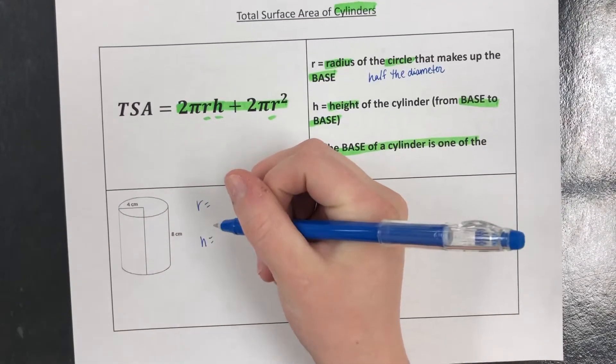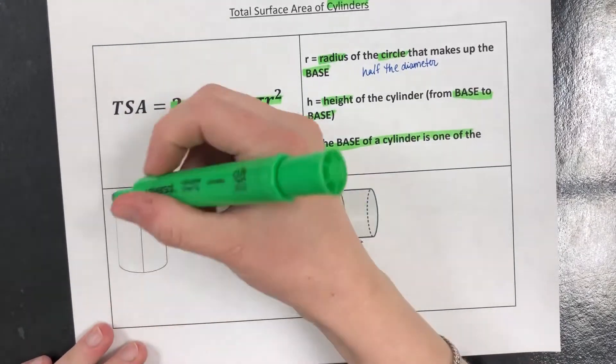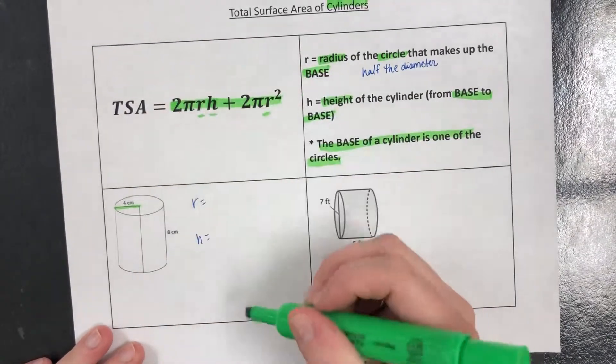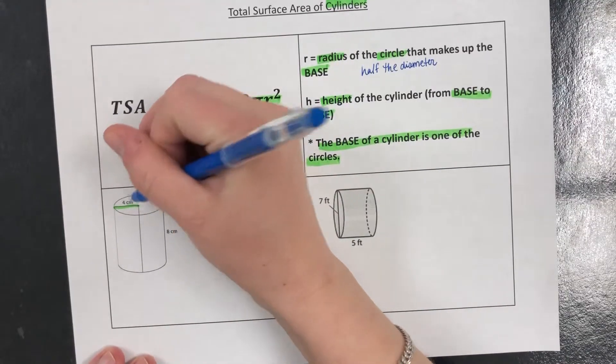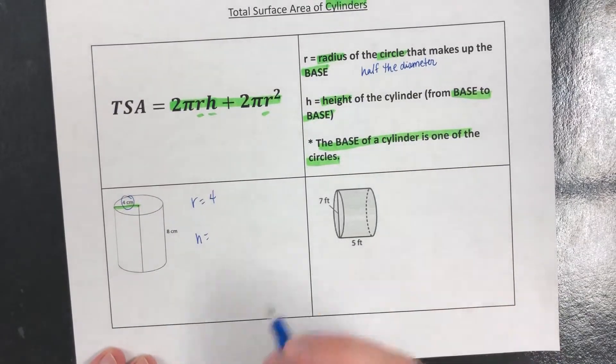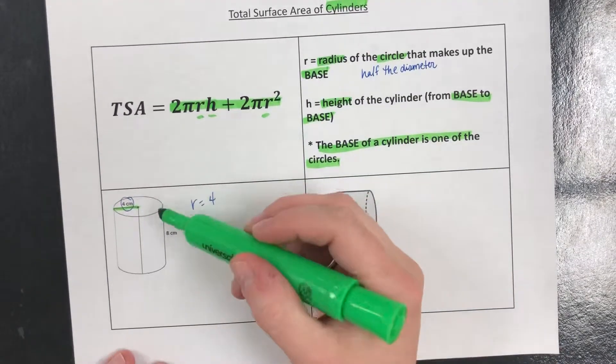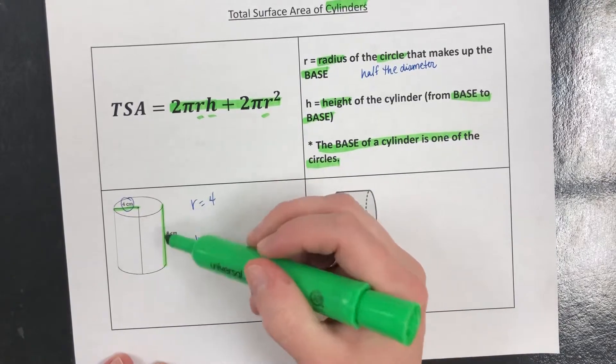When we're looking for the radius, we're looking for that circle and we're looking for this piece right there from the outside of the circle to the center. That's the radius. In this case the radius is 4. The height of the cylinder from base to base, so from circle to circle, in this case is 8.